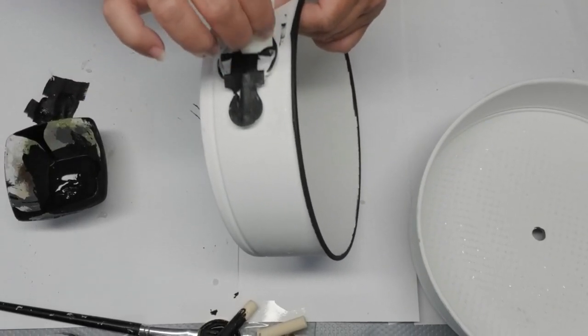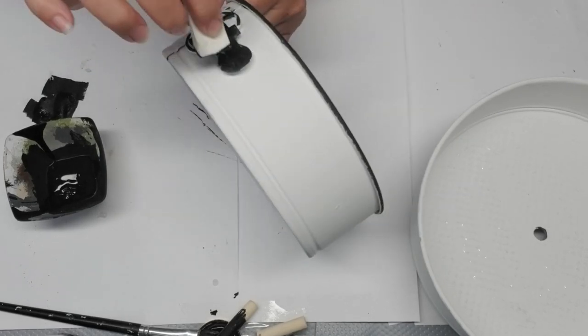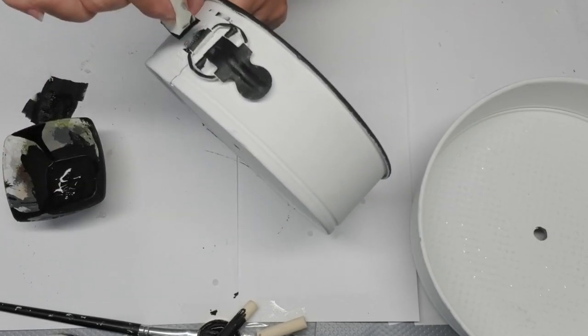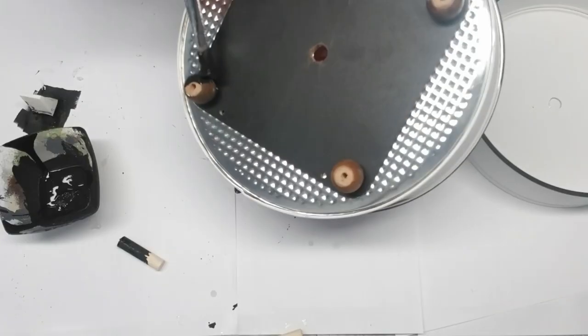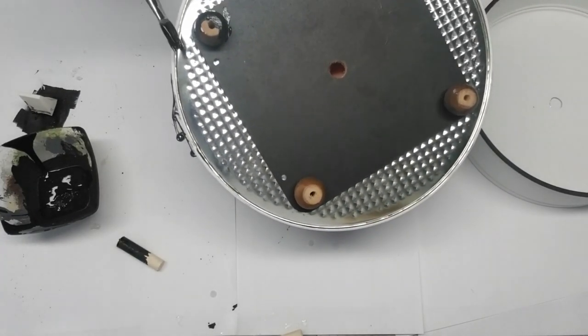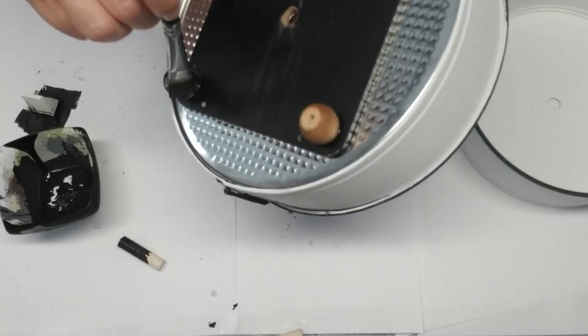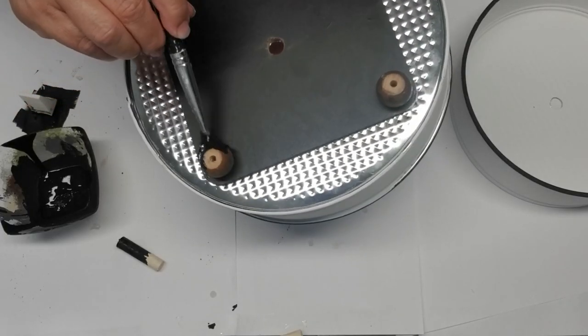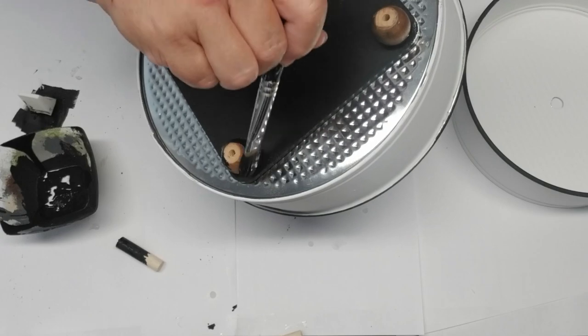Since this bottom pan already had some feet on the bottom, I didn't need to add anything, but I am just going to paint them black so they match in with the theme of this tray.